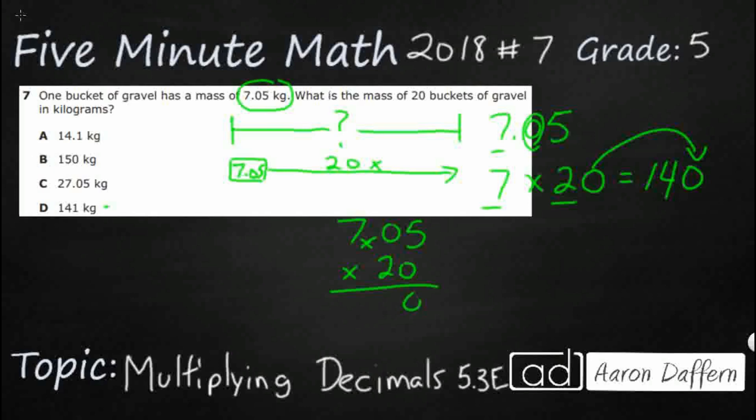This first row is easy—that's going to be zero, zero, zero. Multiplying by zeros is easy. Now we're going to put a zero in the tens place. Now we're going to do the actual multiplication with this two. Two times five is ten, so we're going to carry that. Two times zero is zero—add that one back in is one. Then two times seven—there's your 14.